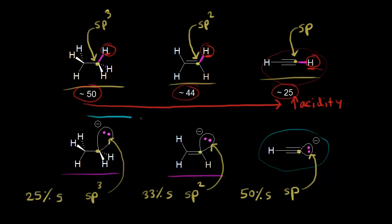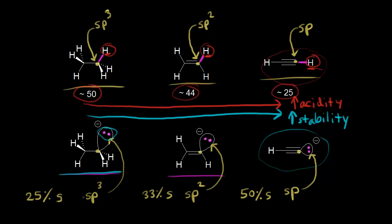As we move to the right, we are increasing in the stability of the conjugate base. How do we explain this increased stability in terms of hybridization? The lone pair electrons occupied an sp3 orbital at 25% s character, then sp2 at 33%, and sp at 50%. So increasing s character increases the stability of the conjugate base.